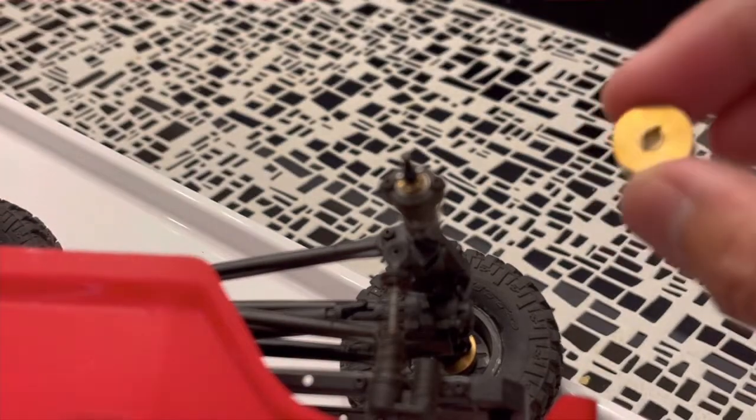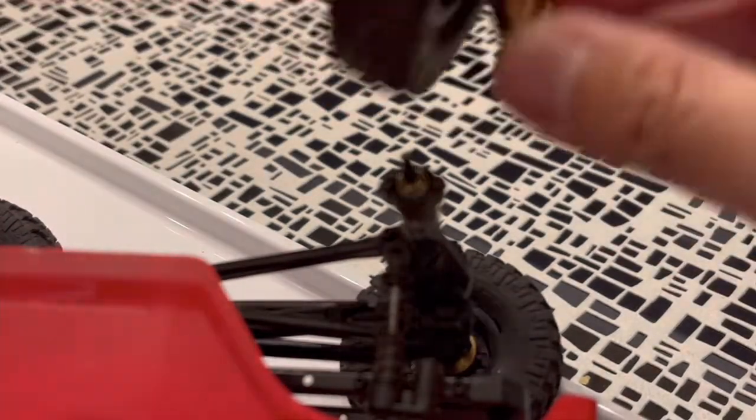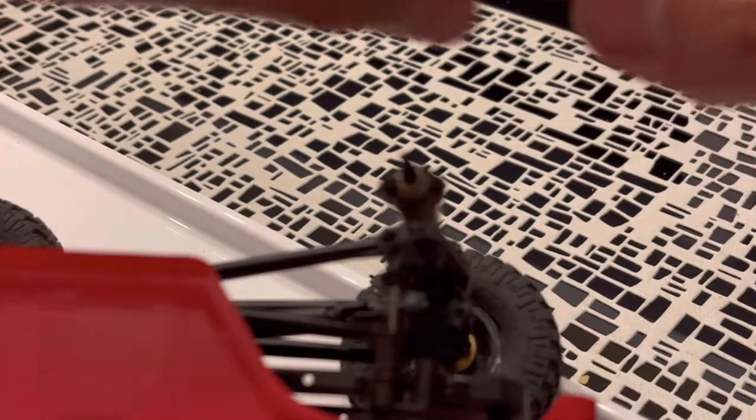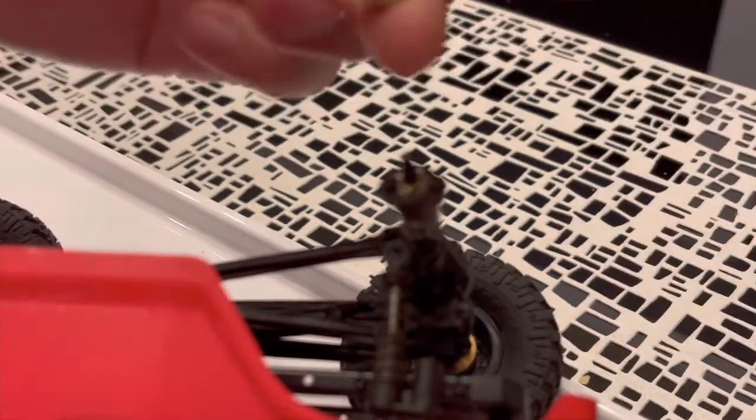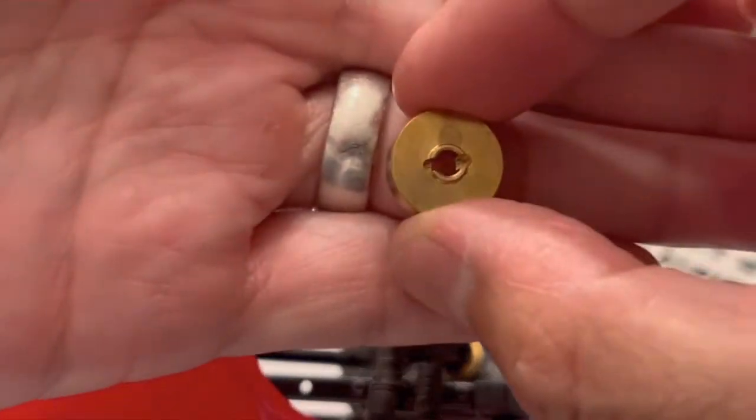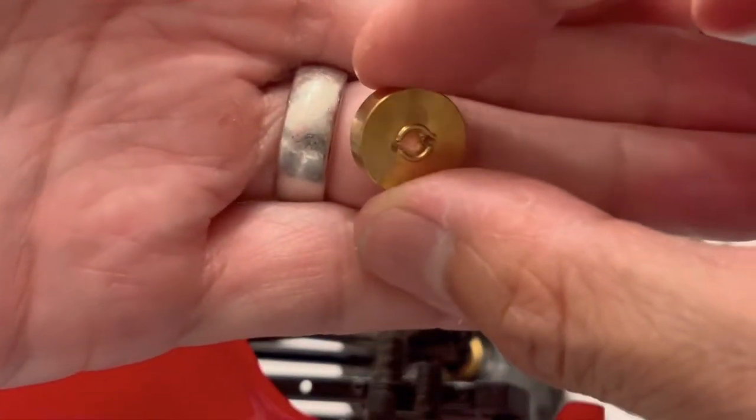Instead of putting the weight on the wheel and then sticking the whole thing on here, I like to put the weight on first because it's just easier to align this hole here. You see where the horizontal part goes, that's where the rod goes for the pin. Slide that on.